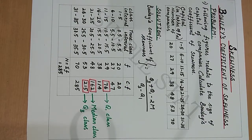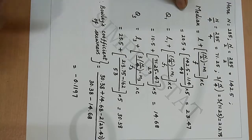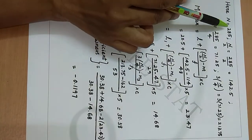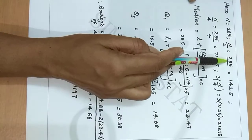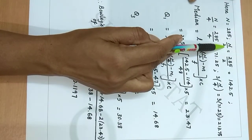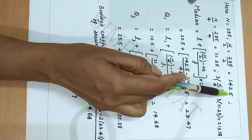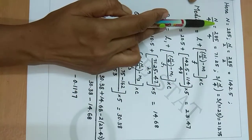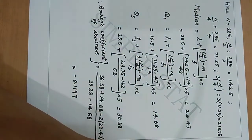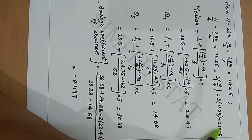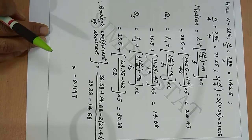Now let's proceed with the calculation. Here we have N = 285, that is the total frequency value as 285. Therefore find N/2 which is 142.5. Then find N/4 which gives 71.25. Then find 3N/4 which is 213.75.